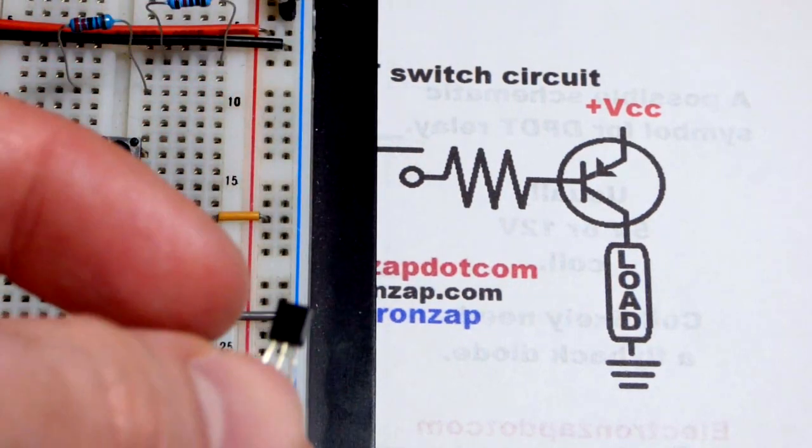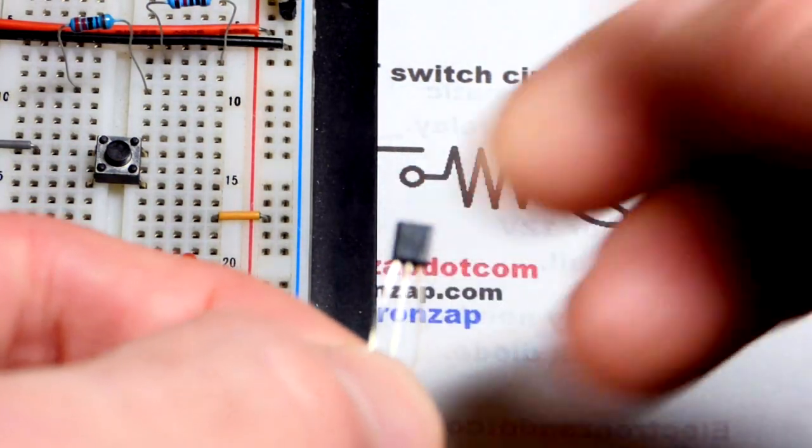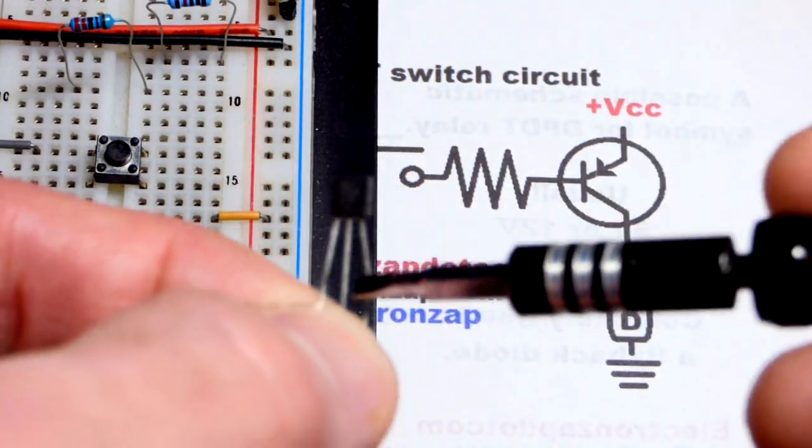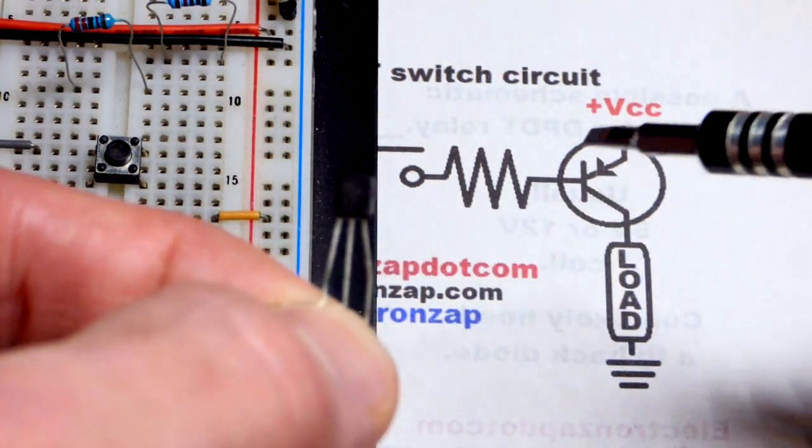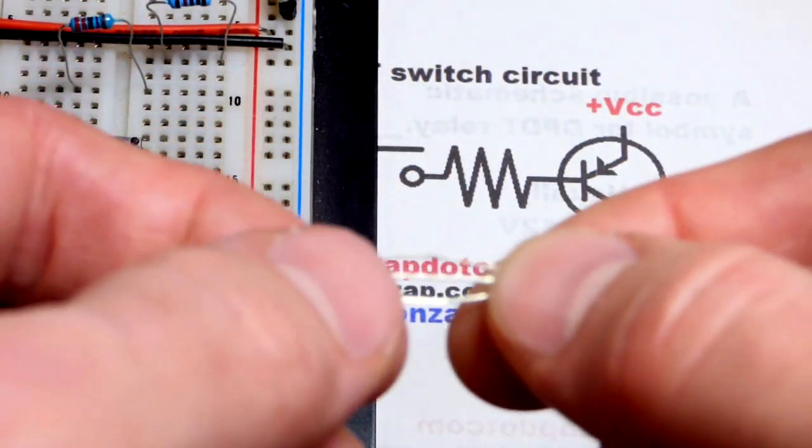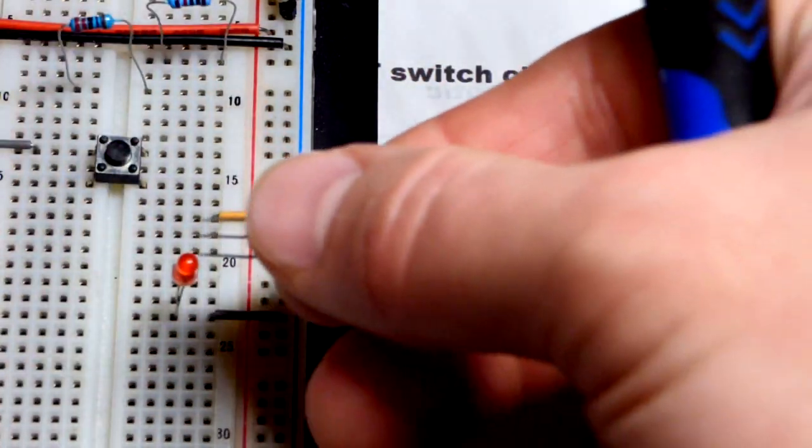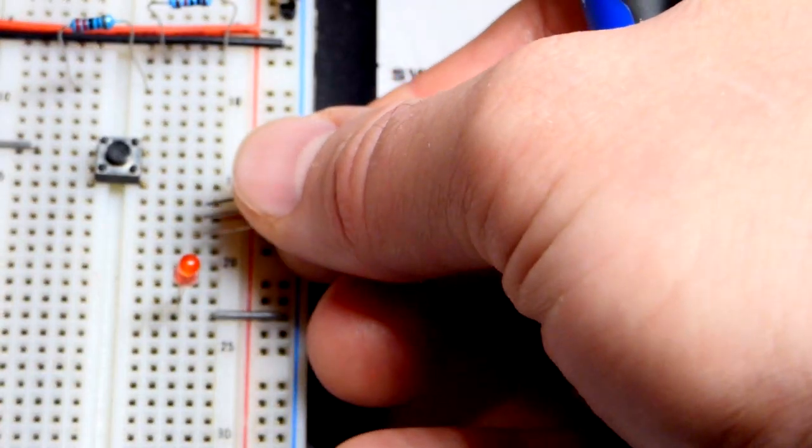We're going to use the PNP bipolar junction transistor. This is the 2N3906, and the pin layout is emitter to the left there, base to the middle, and collector to the right. I want the emitter higher up on the board than the other pin, so I'm just going to rotate it like that. So now we've got emitter, base, collector.